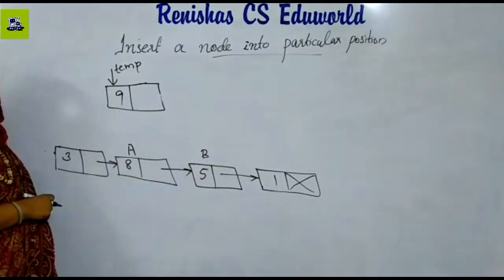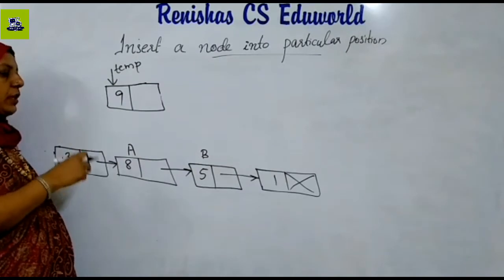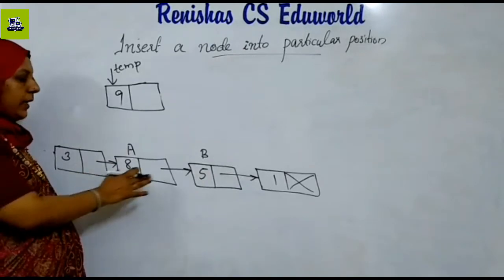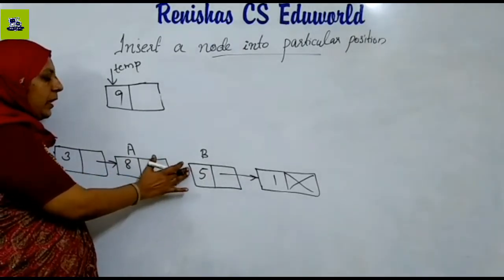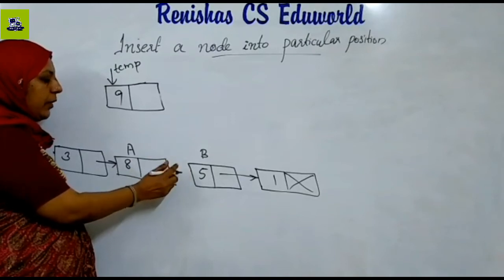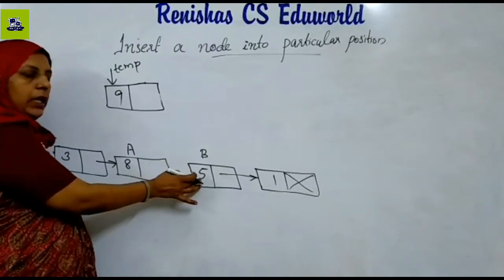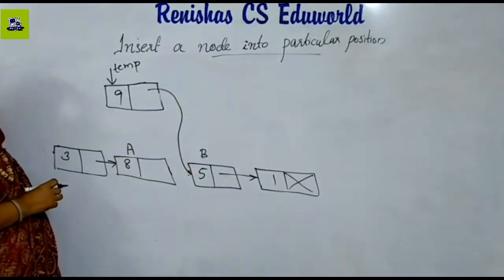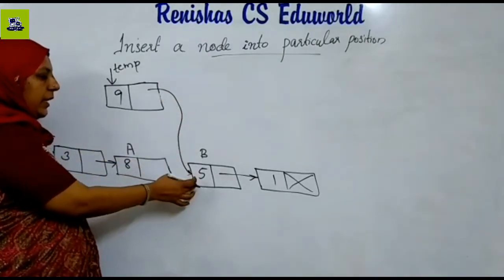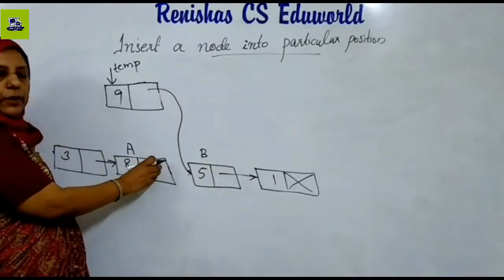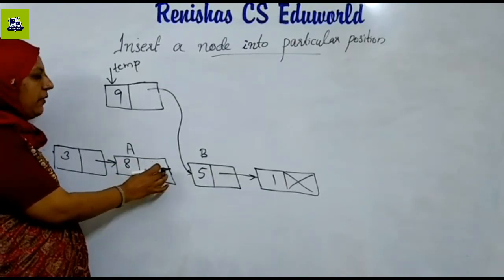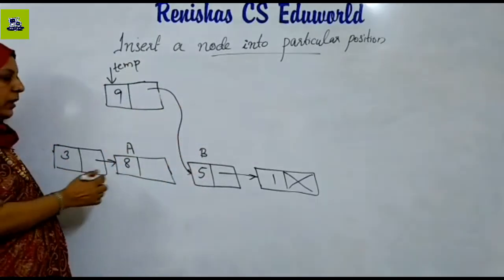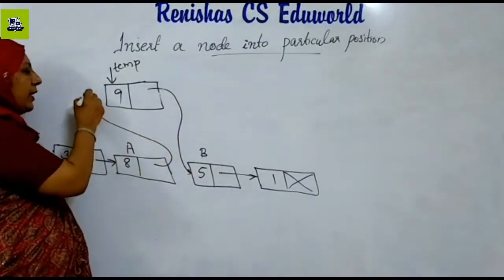If we want to insert at the third position, temp's linked field is connected to node B. One element will be connected to B. The second node is connected, and there will be a third element. The second node is connected to B.